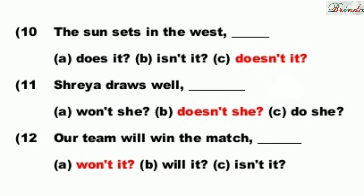Next: Shreya draws well. Turn it to the opposite — Shreya doesn't draw well — so the answer should use 'doesn't'. Options: won't she, doesn't she, do she. The answer is: doesn't she.